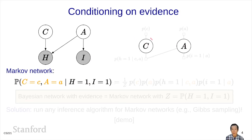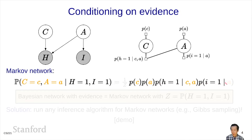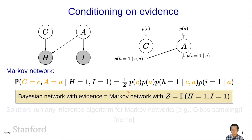In the resulting factor graph, only c and a remain. We have p of c and p of a as before. The factor that previously depended on c, a, and h now has h fixed to 1, so h is no longer a variable. Similarly, i equals 1, so i is no longer a variable. We multiply these four factors together to get the factor graph, then normalize by 1 over z. Here z is different — it is not 1 because we are conditioning on evidence. In particular, z equals the probability of the evidence.